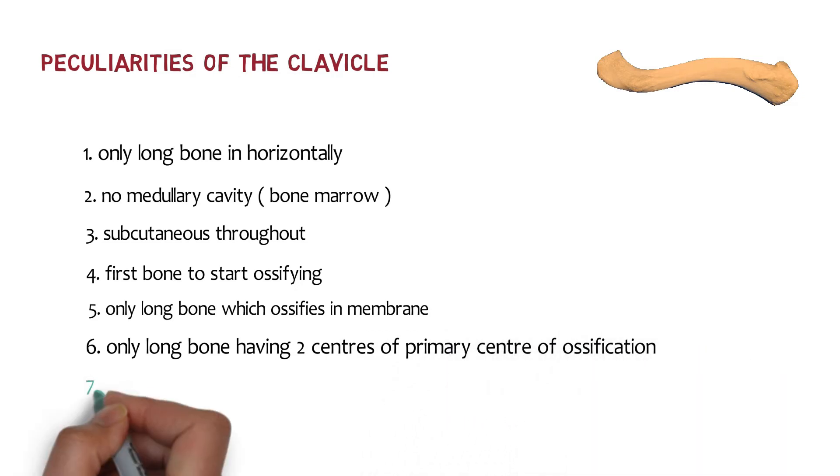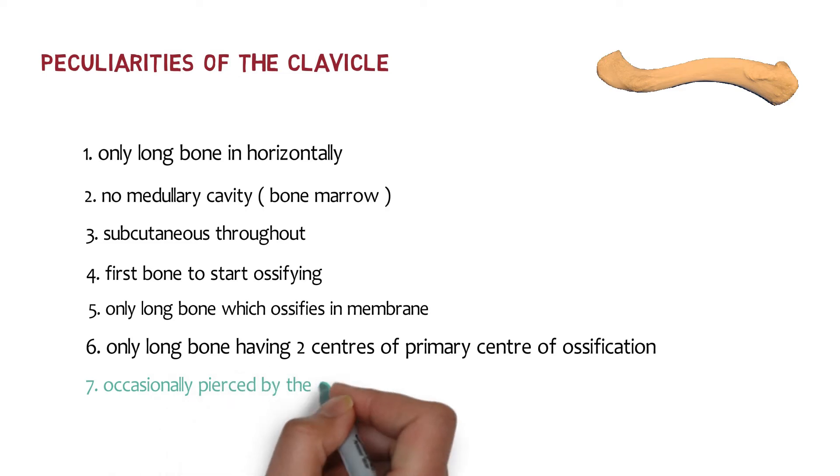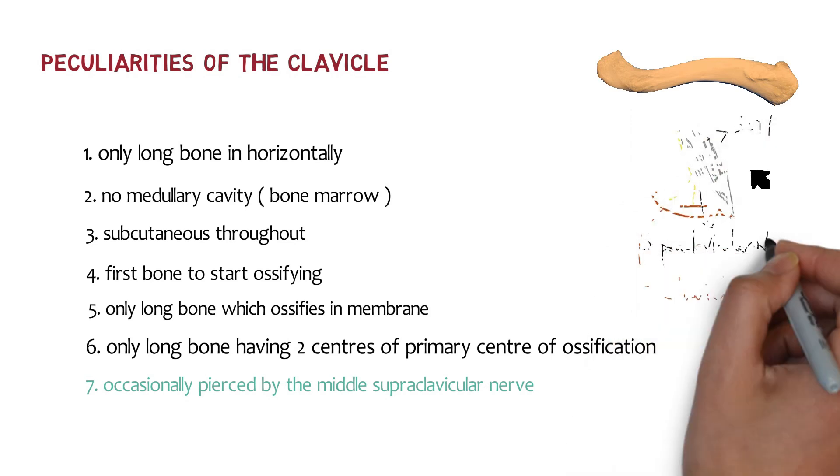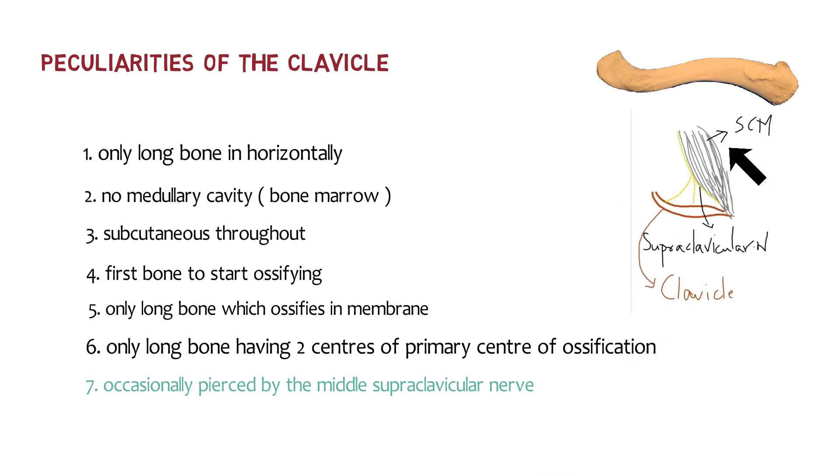And the last one is it might be pierced inside out by the cutaneous nerve, which is the supraclavicular nerve. Look over here. This is sternocleidomastoid. Just below it we have the clavicle. And look over here, this is the supraclavicular nerve which is piercing the clavicle. The supraclavicular nerve is a superficial sensory nerve originating from C3 and C4 nerve roots of the superficial cervical plexus.